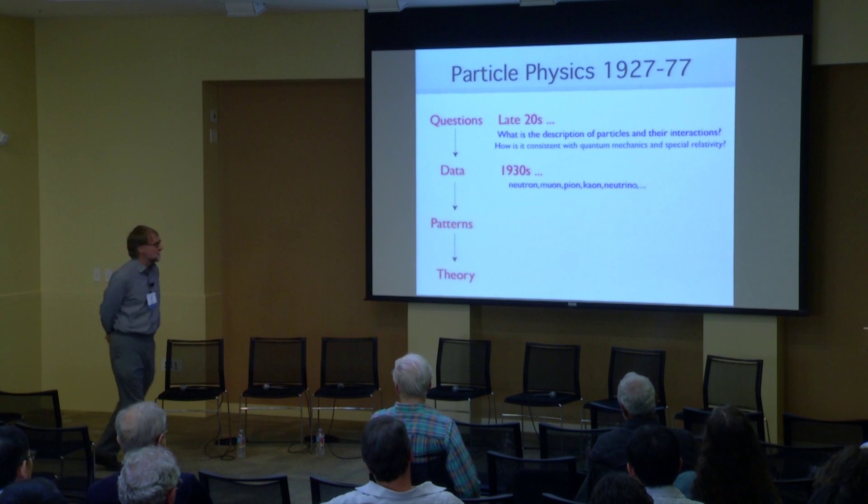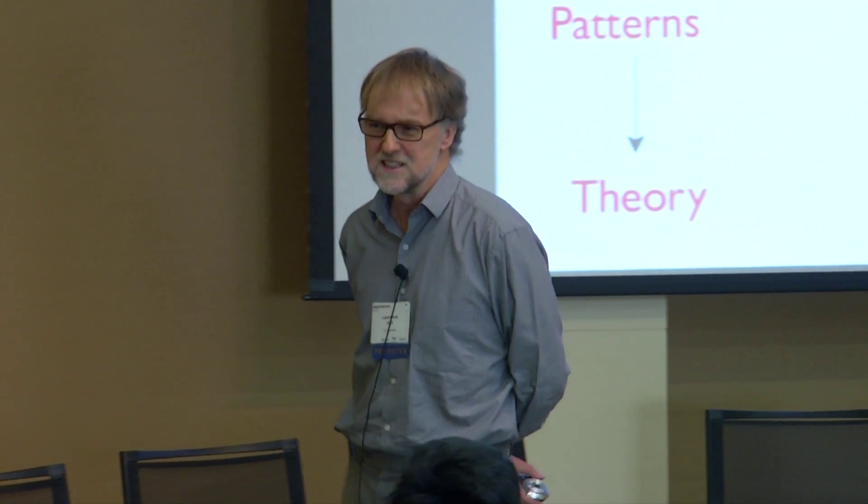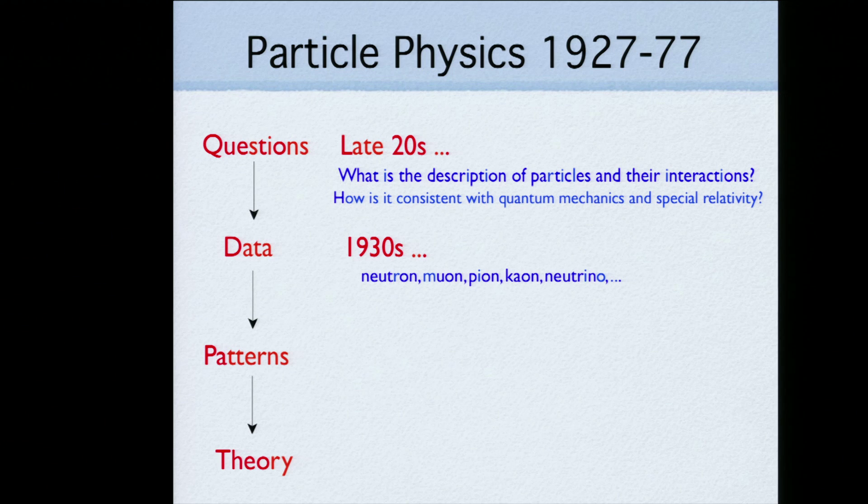And so I thought it would be fun to look at a half century of particle physics in the era of 27 to 77, roughly. The dates are a bit fuzzy. But the questions appeared right at the late 20s here, when we needed to understand what was the description of particles in their interactions, such that they could be consistent with the recently discovered quantum mechanics and also special relativity. That was the driving thing one had to do, and it took a 50 years cycle to get there. The data poured in in the 30s, 40s, 50s, 60s, every decade, all the way up to the 70s.